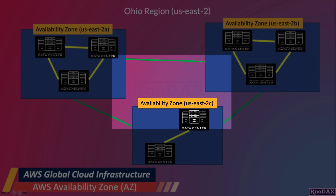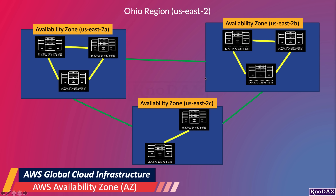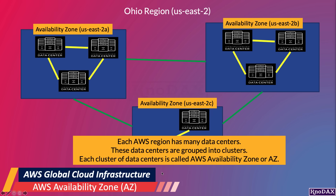One crucial point here is that, in this example, the number of data centers in each AZ shown is just for understanding the Availability Zones concept. The actual number of data centers in each AZ may be different. So, the takeaway is that each AWS region has many data centers. These data centers are grouped into clusters, and each data center cluster is called an AWS Availability Zone, or AZ.